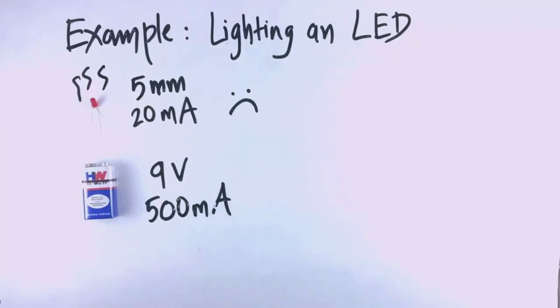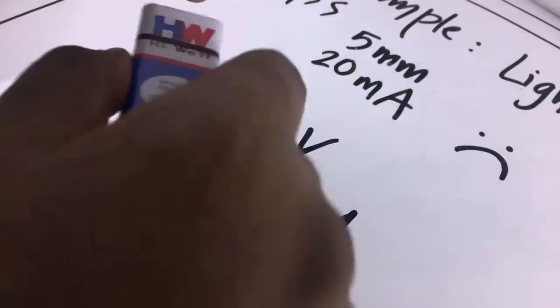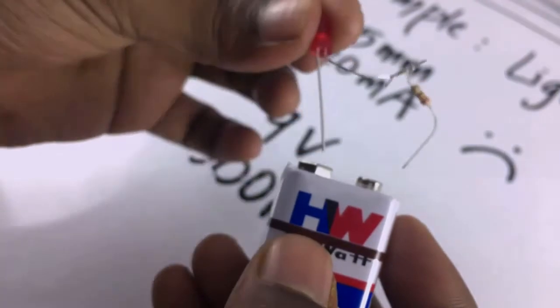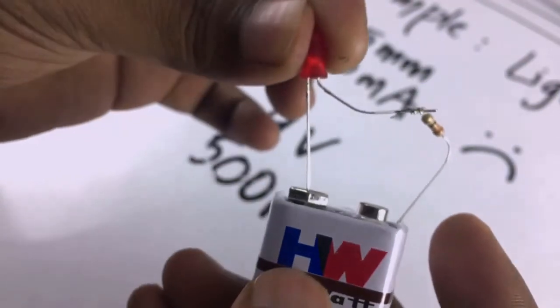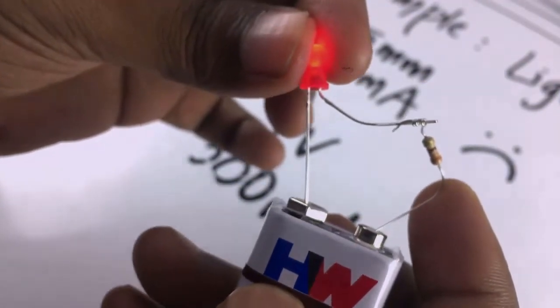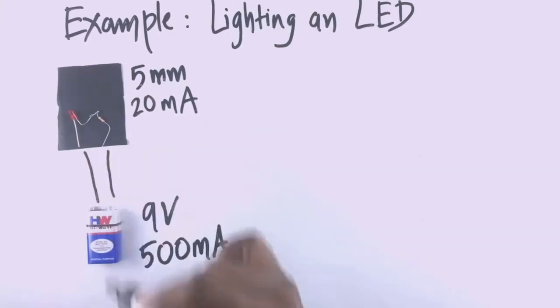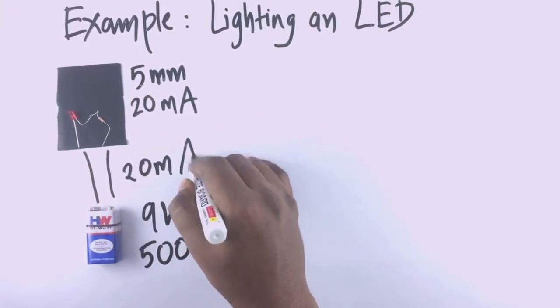This is where we use a resistor. Now I will add this resistor between the battery and the LED. Now the LED lights up properly. It limits current to 20mA. This is an example of use of resistor.